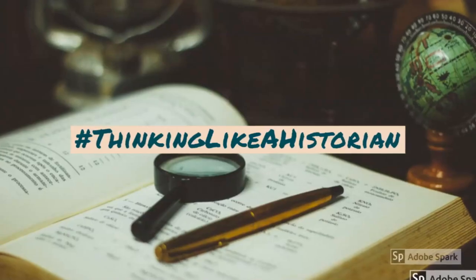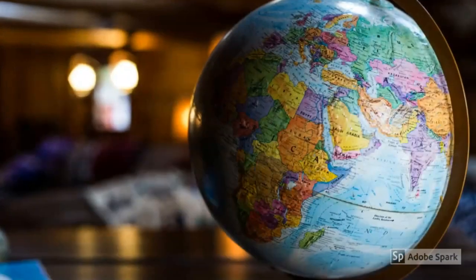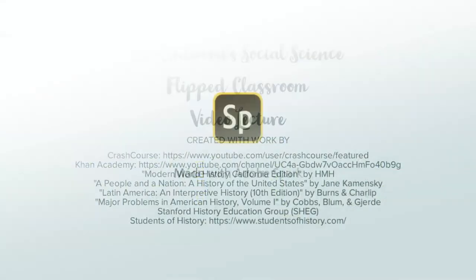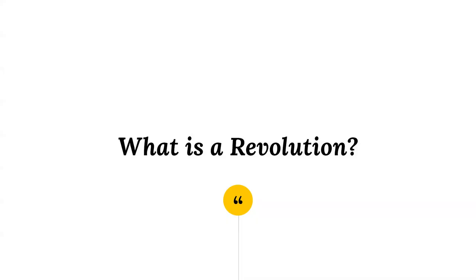Our focus throughout this unit is to examine what exactly those changes were and how and why they took place. You have a new essential question for this unit and lecture series: What impact did the Industrial Revolution have on western economics, politics, and society? You want to jot down that essential question before we move forward.